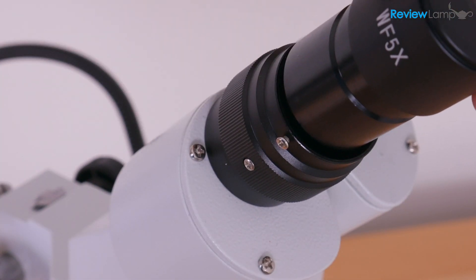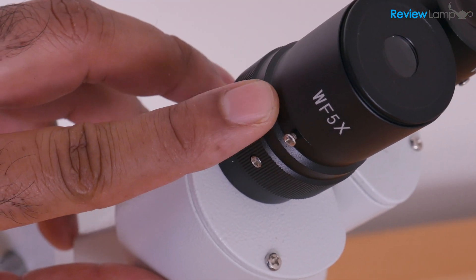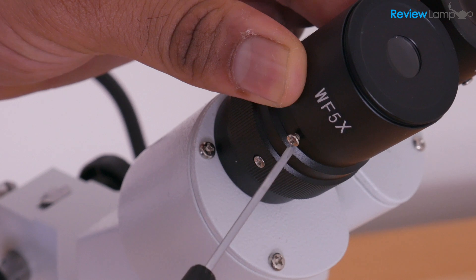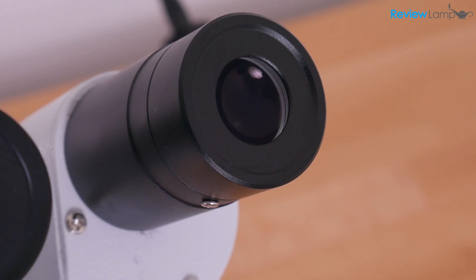And to install the 5x eyepiece, simply slot it in and make sure that it is flush with the receptacle. Then hold it in place, grab your screwdriver and tighten that screw back up. And we're going to repeat the same process for the other eyepiece as well.